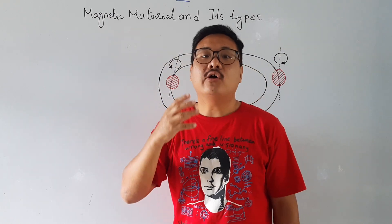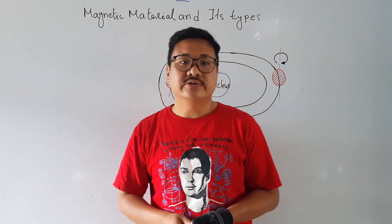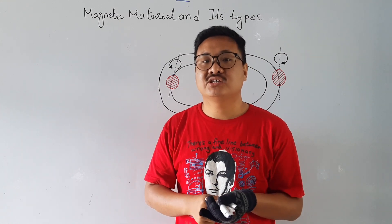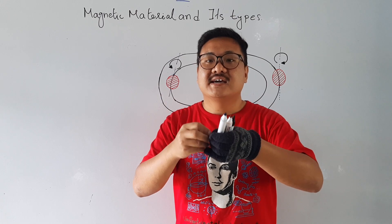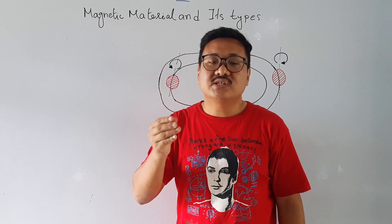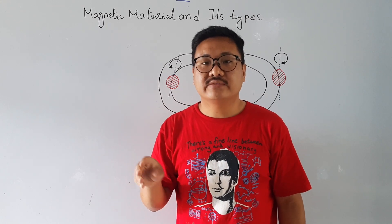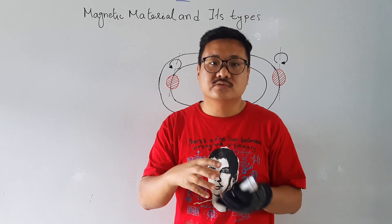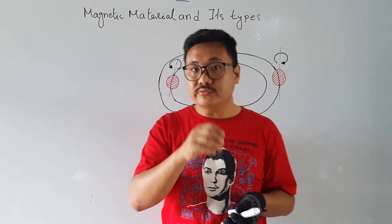In magnetic material, whenever we bring two magnets close together, they will either repel or attract each other. If the poles are unlike — for example, south pole and north pole — they will attract, and north pole and north pole will repel. This is because of the magnetic field interacting between the two magnets. There is a magnetic force that could be attractive or repulsive depending upon the nature of the poles.